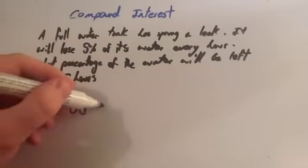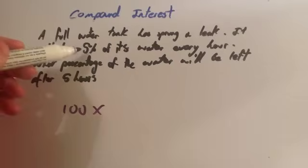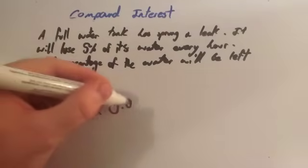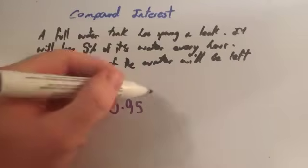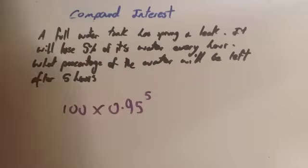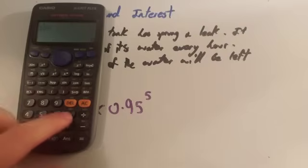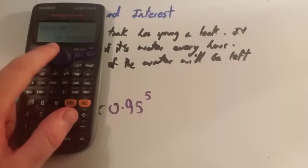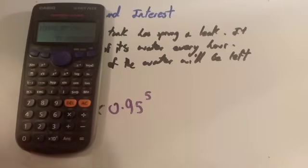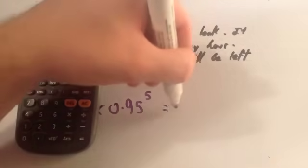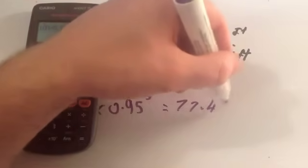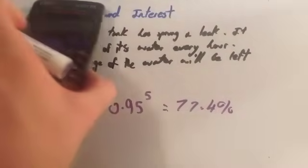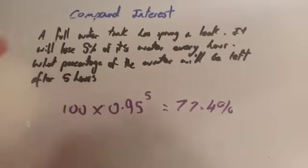The initial is 100%, multiplied by the multiplier. It's losing 5%, so that as a multiplier would be 0.95. The time is 5 hours to the power of 5. Get your calculator. You're going to do 100 times by 0.95 to the power of 5. That gives you 77.378%. Let's just call that 77.4% of the water. So after 5 hours, that's how much it will have left. If it asks you how much of the water it would lose, you take that away from 100, then that would tell you what percentage of water is lost.